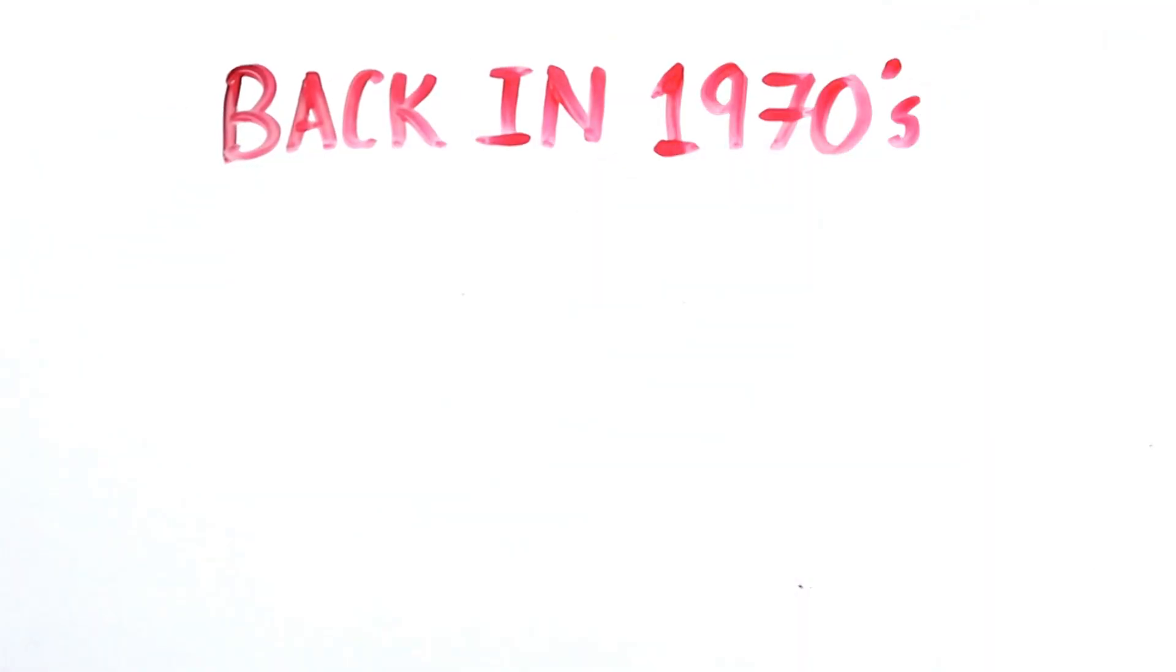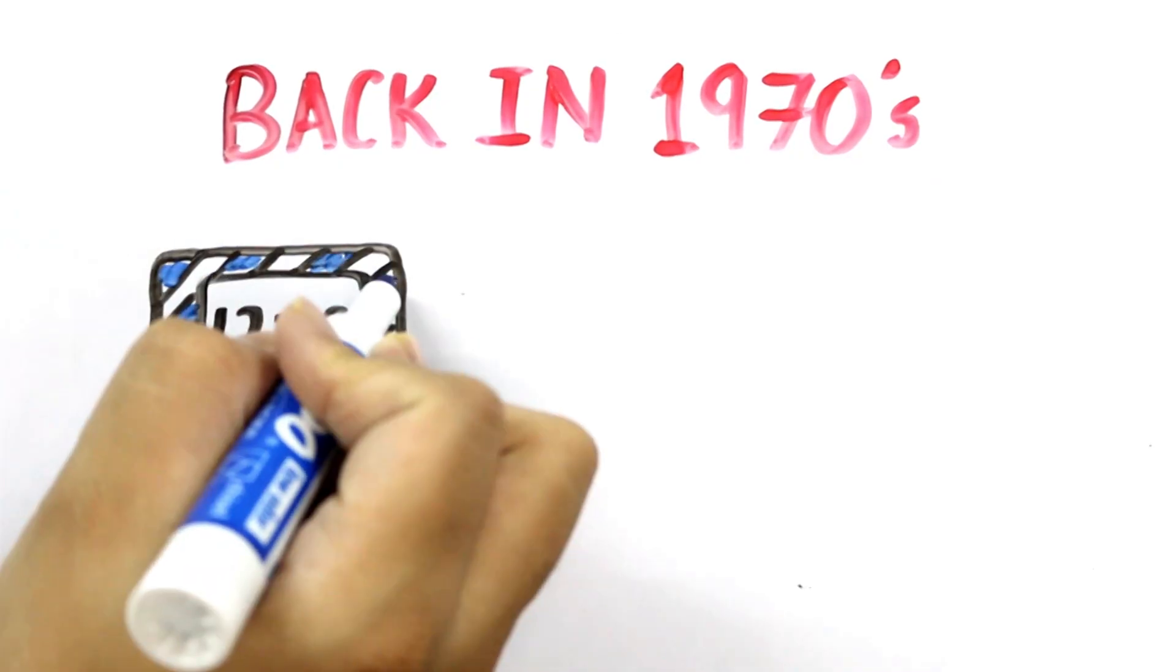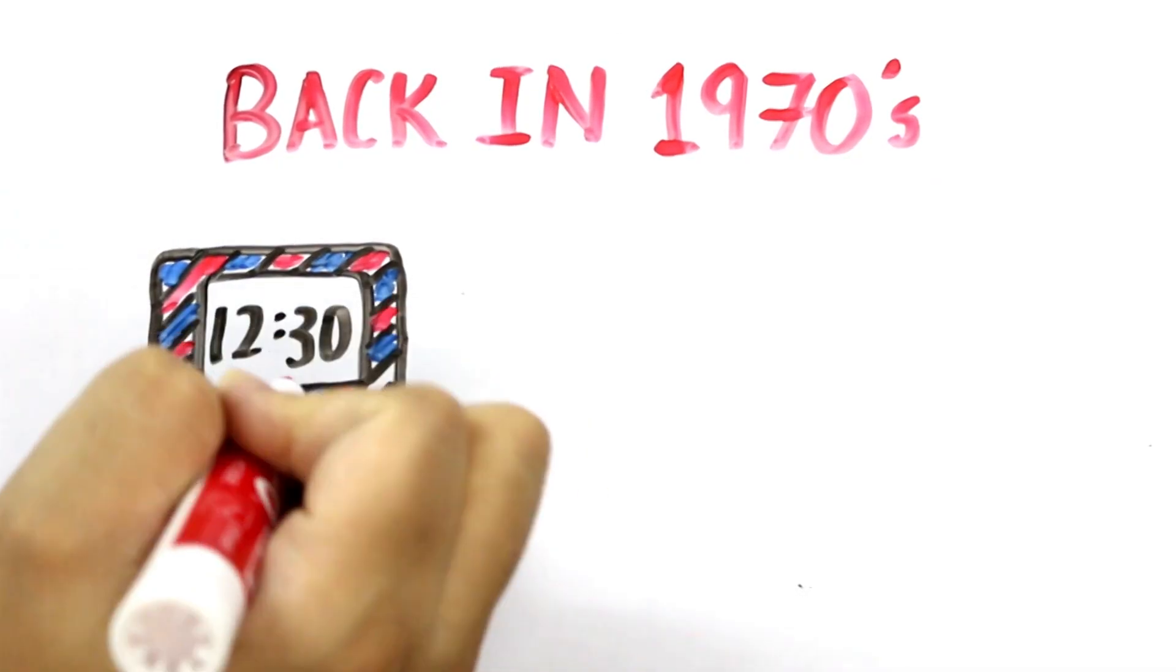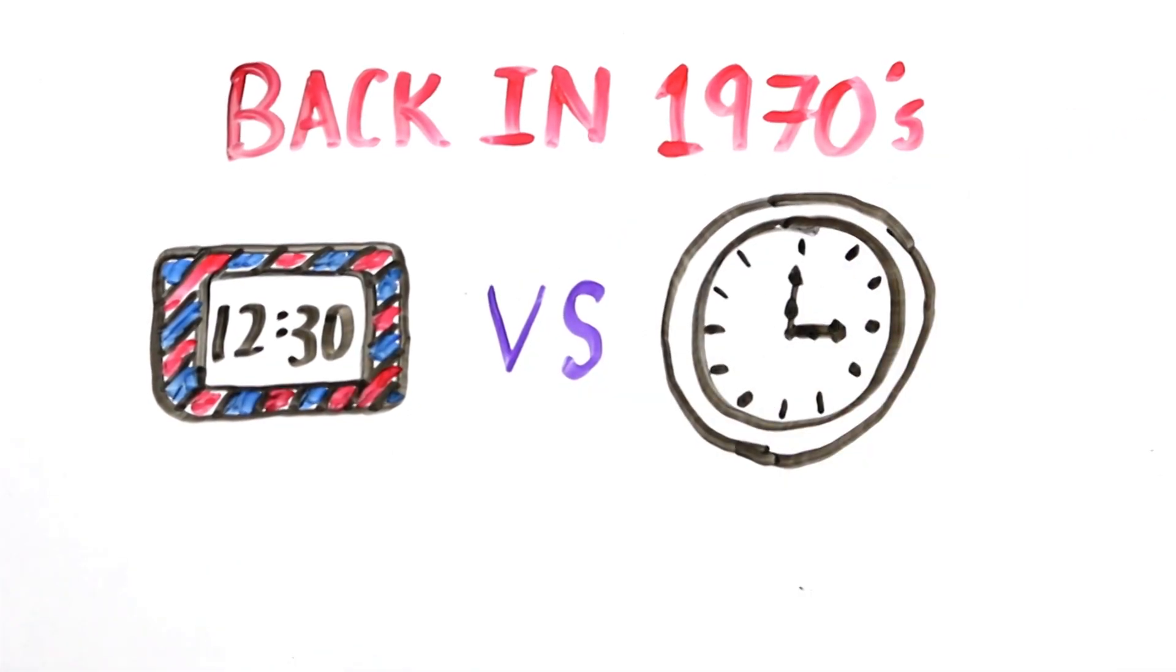Back in the late 1970s, one of the most exciting things you could own was a digital watch. Instead of trying to figure out the time from slowly rotating hands, as you had to do with an old-style analog watch, you simply read the numbers of a digital display.